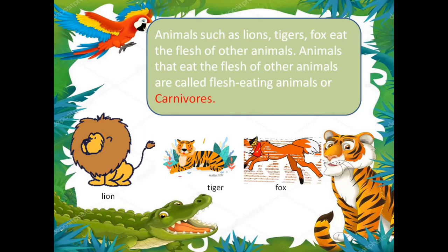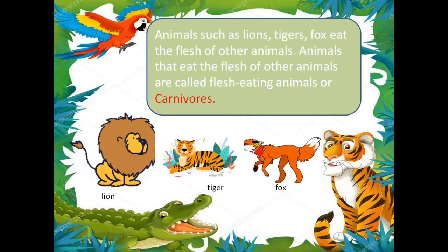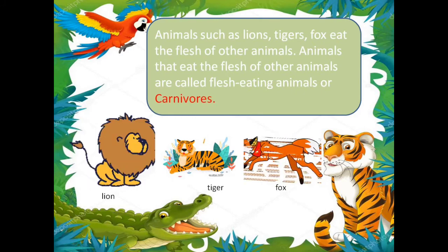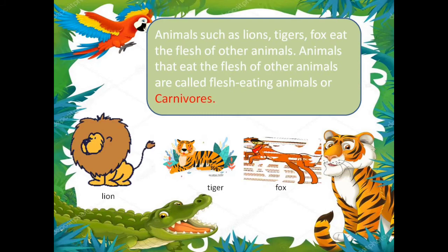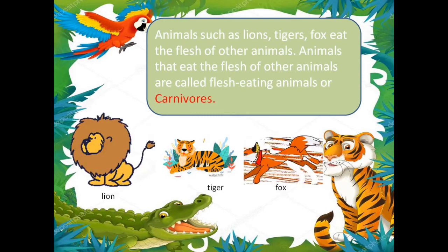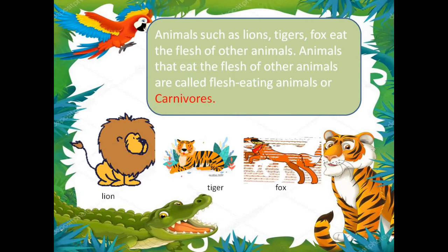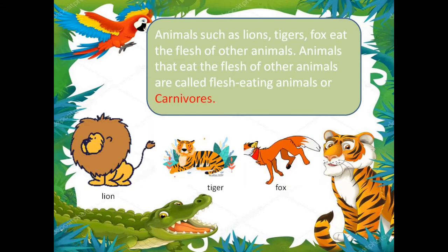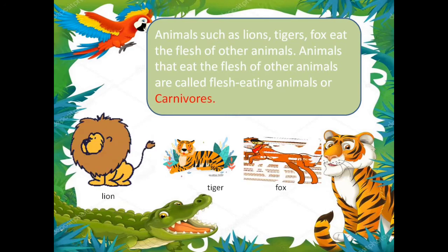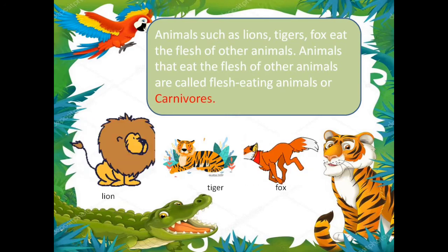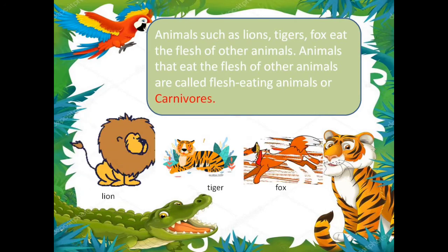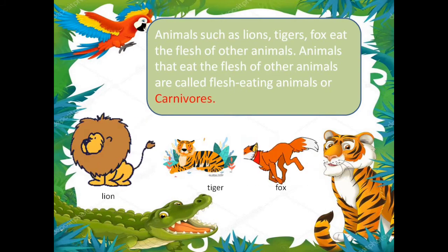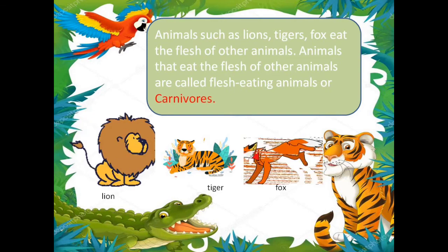There are certain animals who do not like to eat plants — they like to eat the flesh, that is the meat of other animals. They hunt whenever they are hungry, and they kill other animals and eat them.